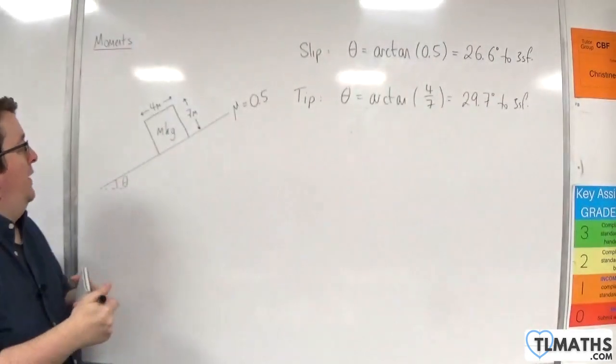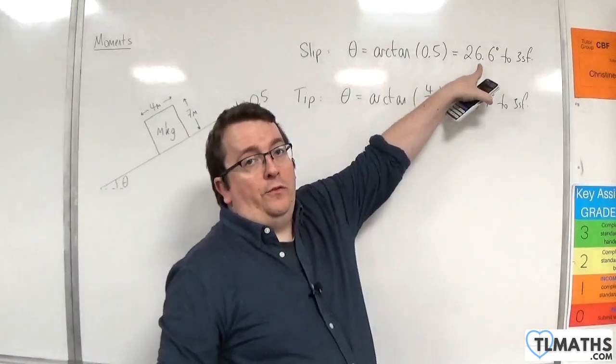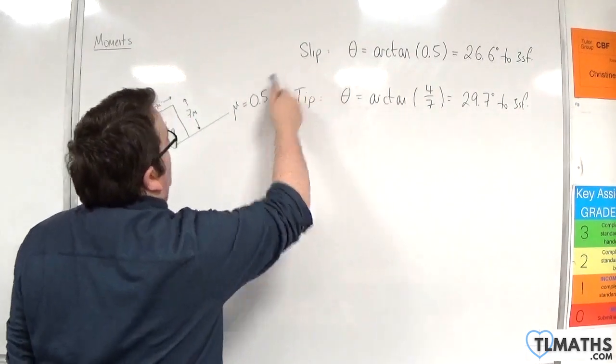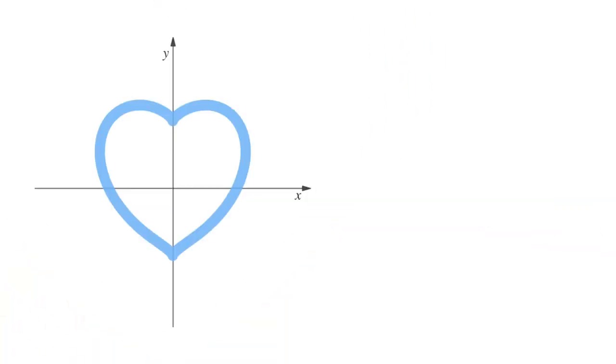So as the angle theta is increased, we're going to hit 26.6 degrees first, of course, before 29.7. And so the block will slip down the slope before it tips.